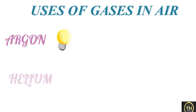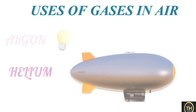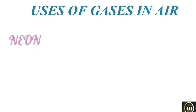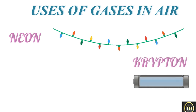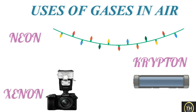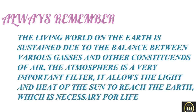Helium is used for obtaining low temperatures and also for generating lift in airships. Neon is used in decorative lights and for street lighting. Krypton is used in fluorescent tubes. Xenon is used in flash photography. Always remember, the living world on the earth is sustained due to the balance between various gases and other constituents of air.